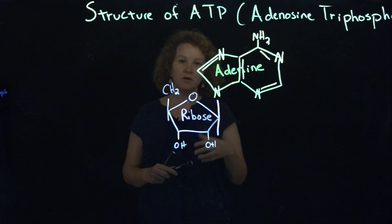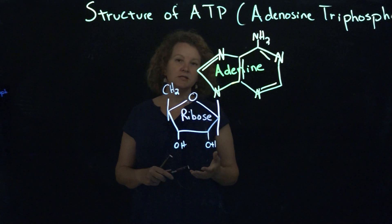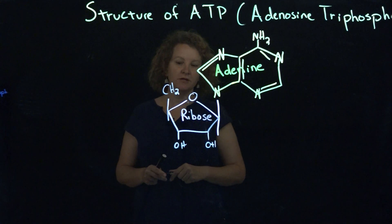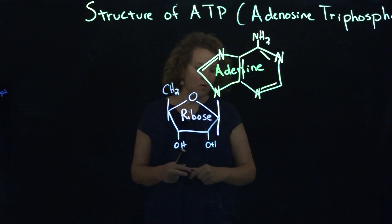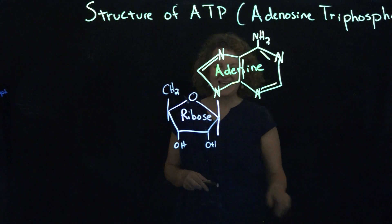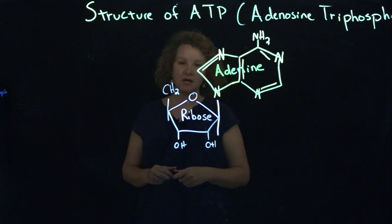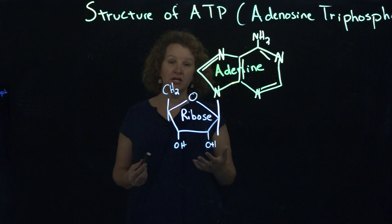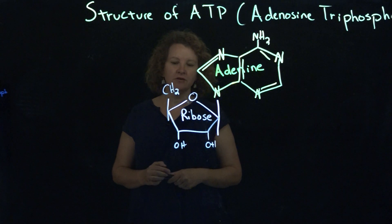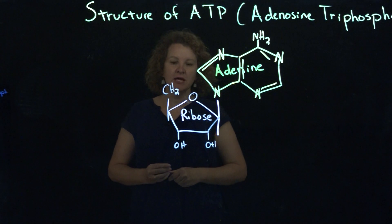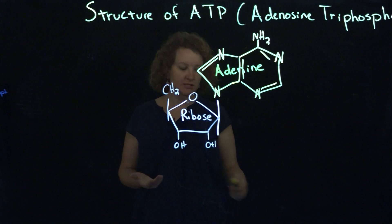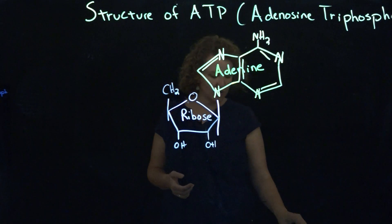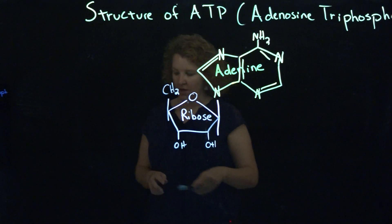Keep in mind that with nucleic acids, they also have a phosphate group. What makes ATP special energetically — what makes it used for energy in the cell — is that it has three phosphate groups. It's the 'T'; it's that triphosphate.